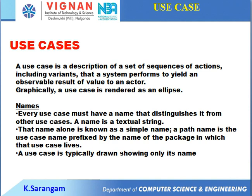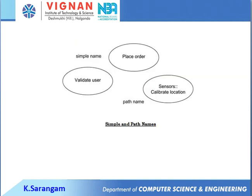Every use case must have a name that distinguishes it from other use cases. The name is a textual string. That name alone is known as a simple name. A path name is the use case's name prefixed by the name of the package in which that use case lives. A use case is typically drawn showing only its simple name, such as 'validate user' or 'place order'.